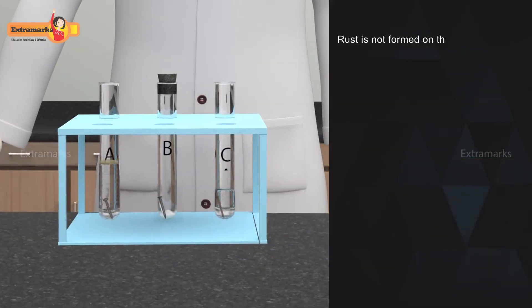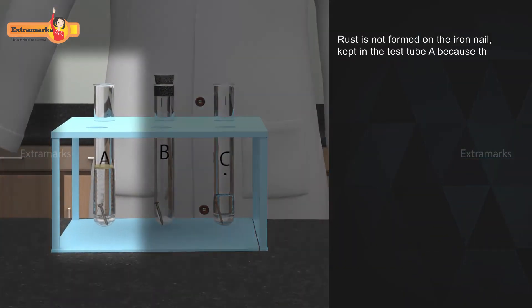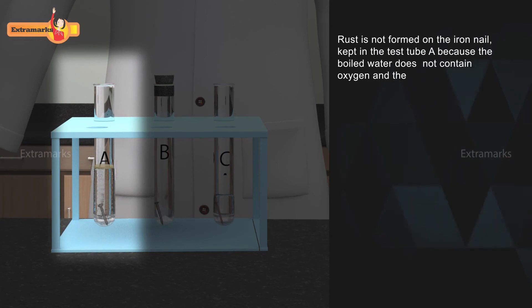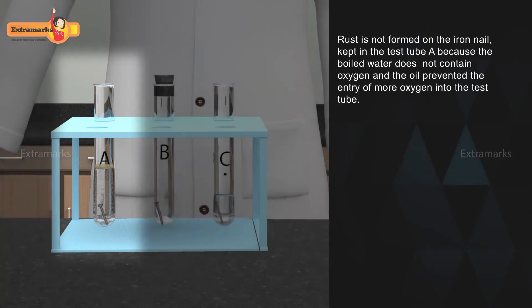Rust is not formed on the iron nail kept in test tube A because the boiled water does not contain oxygen and the oil prevented the entry of more oxygen into the test tube.